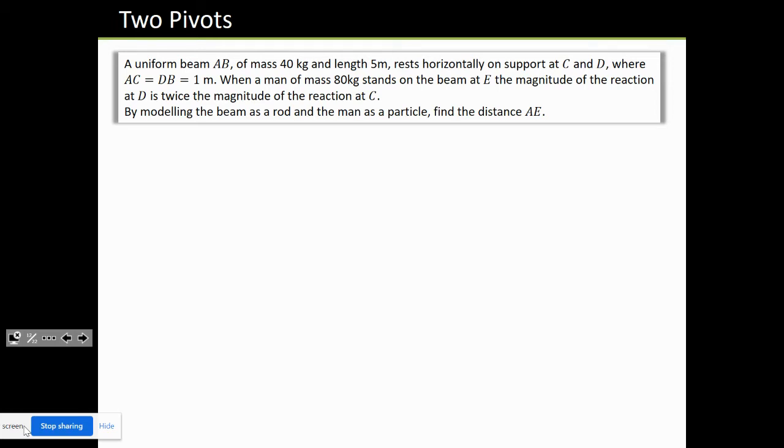So, uniform beam AB, mass 40 kilograms, length 5 meters, rests horizontally. Here's the beam, resting horizontally, length 5 meters, mass 40 kilograms, it's uniform, so in the middle we have a weight of 40g.